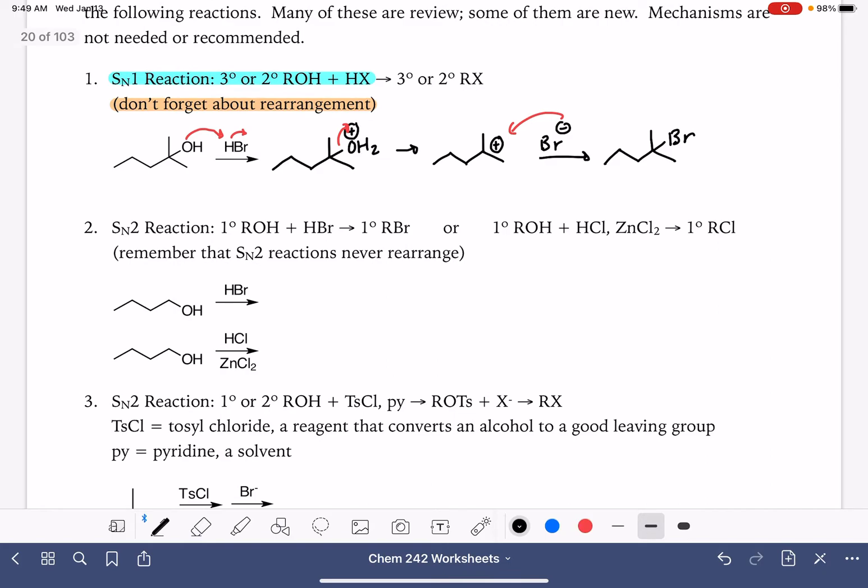Now we're going to look at the SN2 reaction. The SN2 reaction is going to take place between a primary alcohol and a molecule of HBr to produce an alkyl bromide, or a primary alcohol and HCl with a catalyst ZnCl2. So this is one that kind of looks new because we have not seen the ZnCl2 catalyst before. This is a catalyst that's just specifically used for the SN2 reaction when you're using HCl as the reagent. In these reactions, there is no rearrangement in an SN2 reaction. So we are just literally replacing the OH group with the halogen.